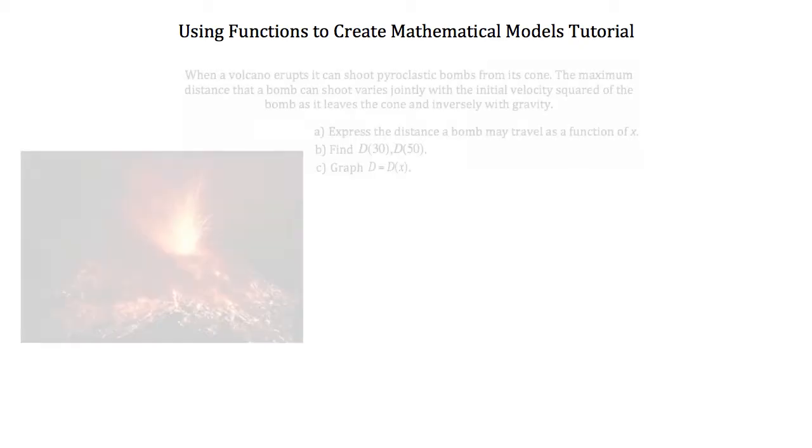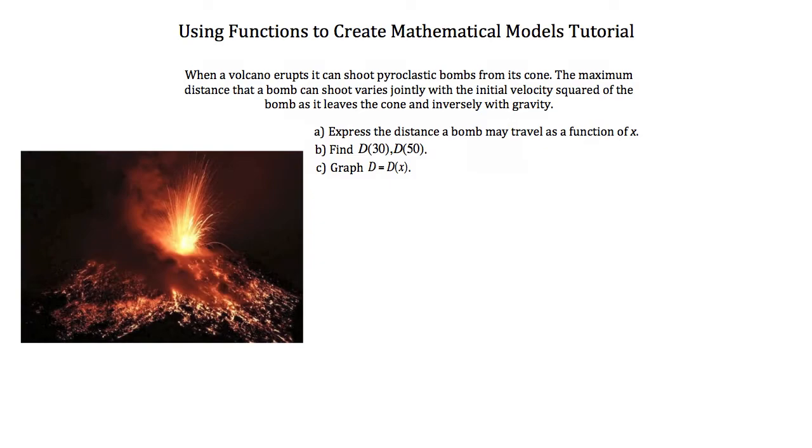Let's begin with a science application. When a volcano erupts, it can shoot pyroclastic bombs from its cone. The maximum distance that a bomb can shoot varies jointly with the initial velocity squared of the bomb as it leaves the cone and inversely with gravity.